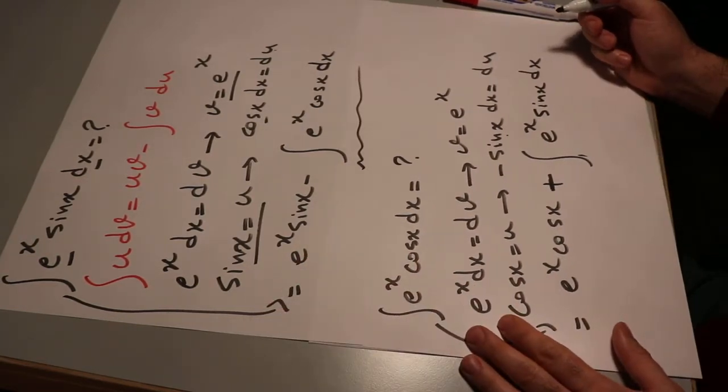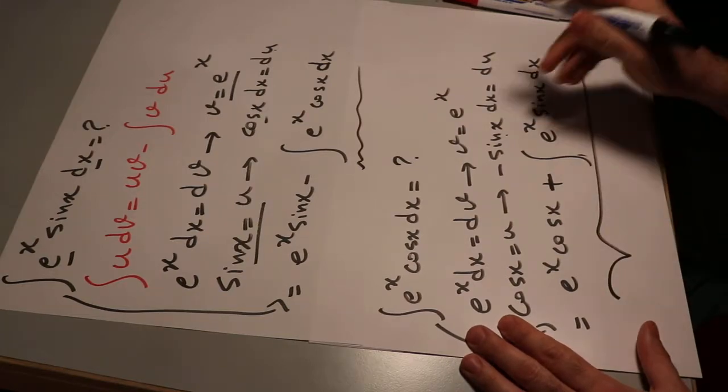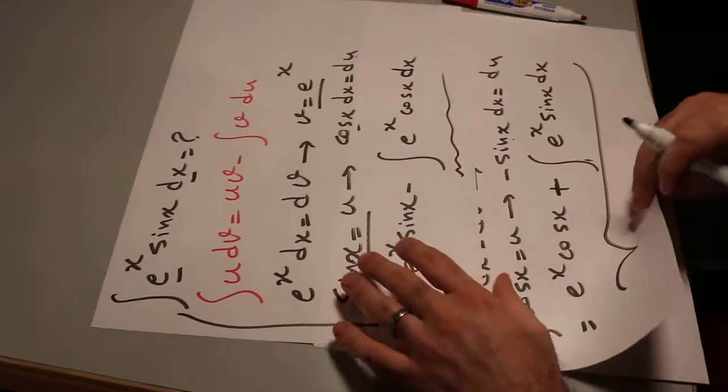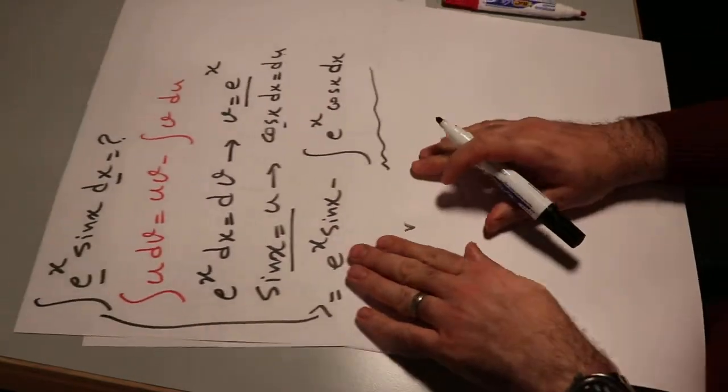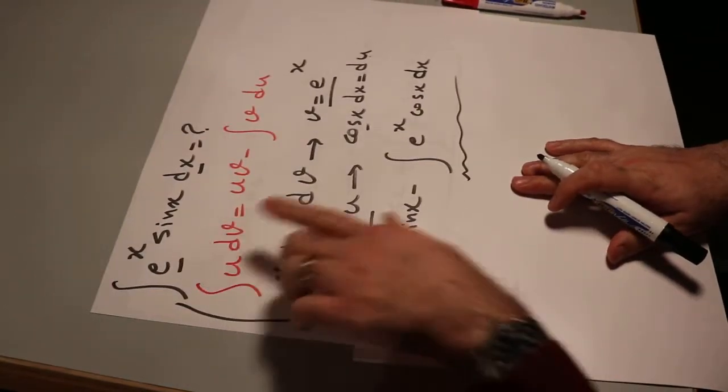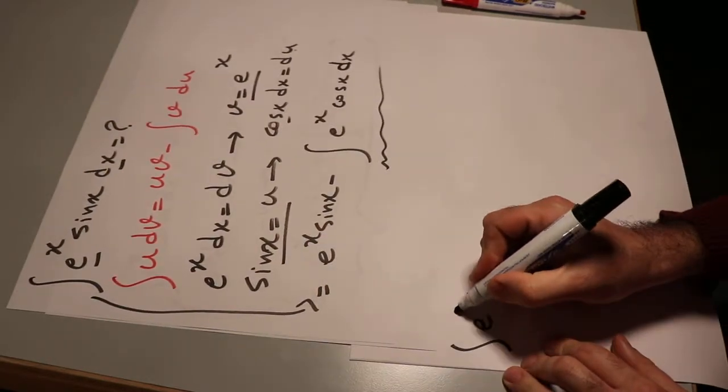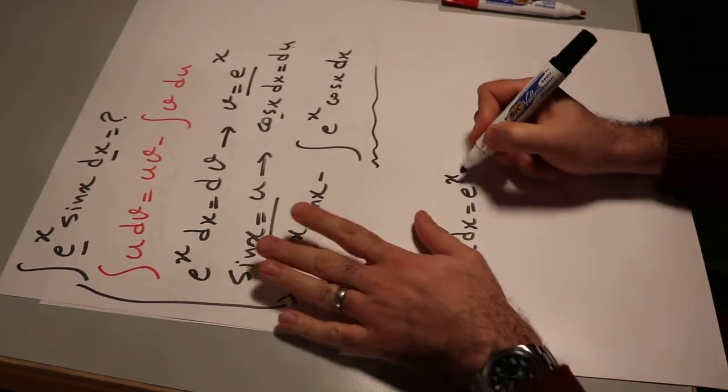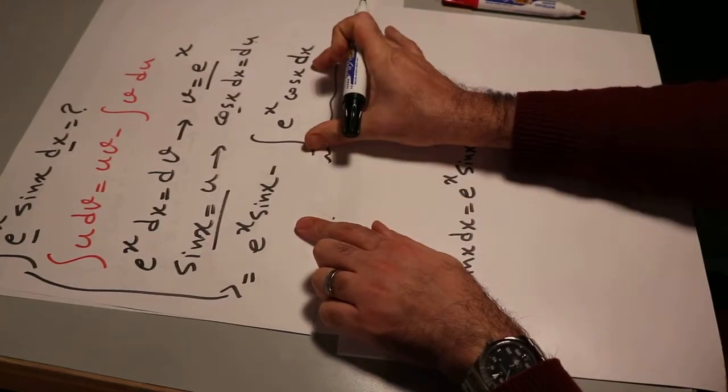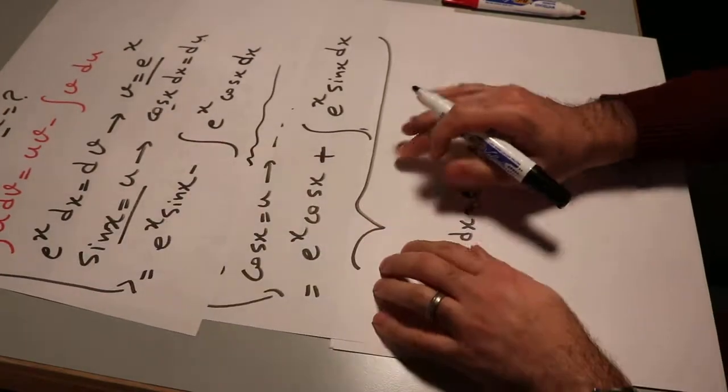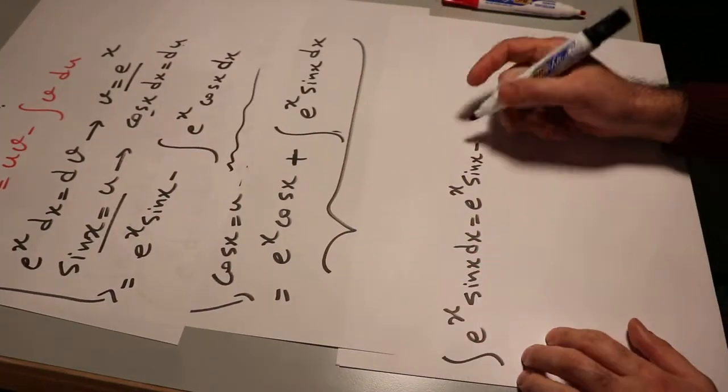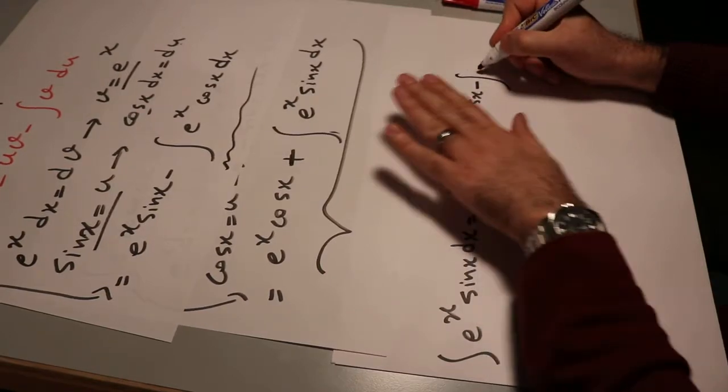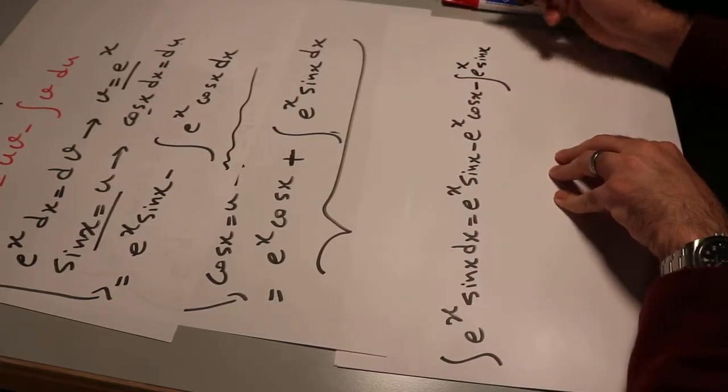So now, we need to substitute this expression into this equation. Okay? So this expression basically is this integral. So let's do that. So that means the original integral was this one, which was integral of e^x sin x dx is equal to e^x sin x minus this integral. And this integral, we already calculated, it is equal to this expression. So it will be minus e^x cos x minus integral of e^x sin x dx.